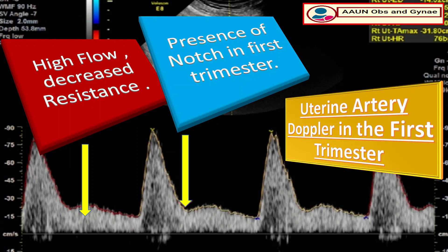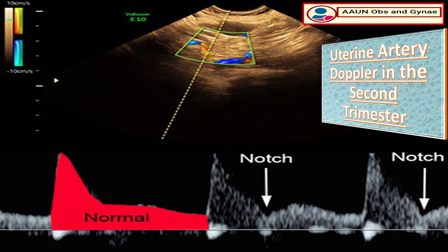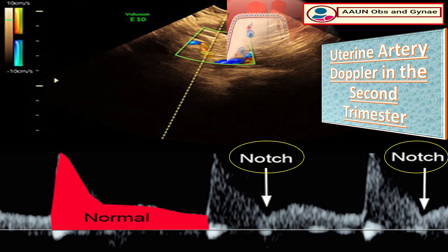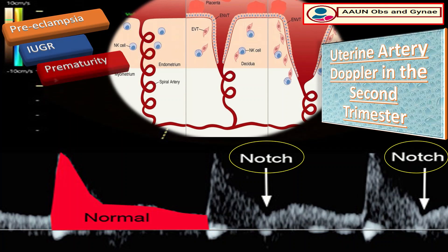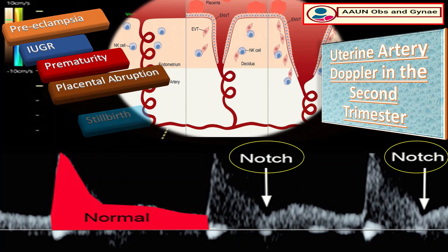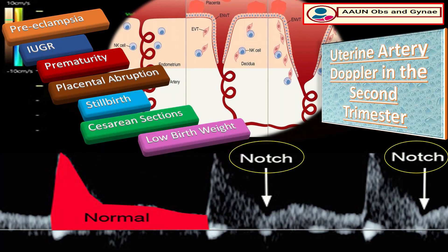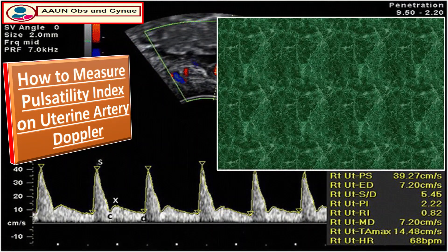In the second trimester, the persistence of a notch in the uterine artery waveform late in the second trimester indicates abnormal placentation, associated with existing or impending conditions such as: pre-eclampsia, intrauterine growth retardation, prematurity, placental abruption, stillbirth, cesarean section, and low birth weight.